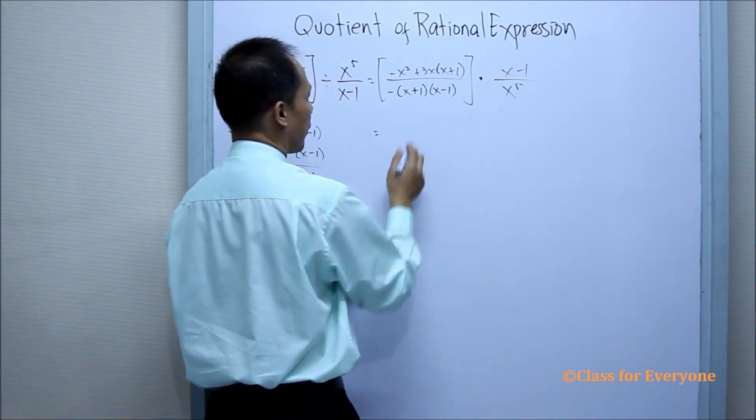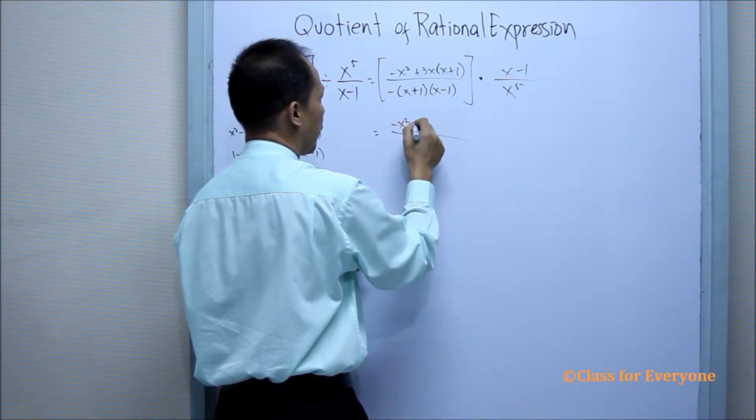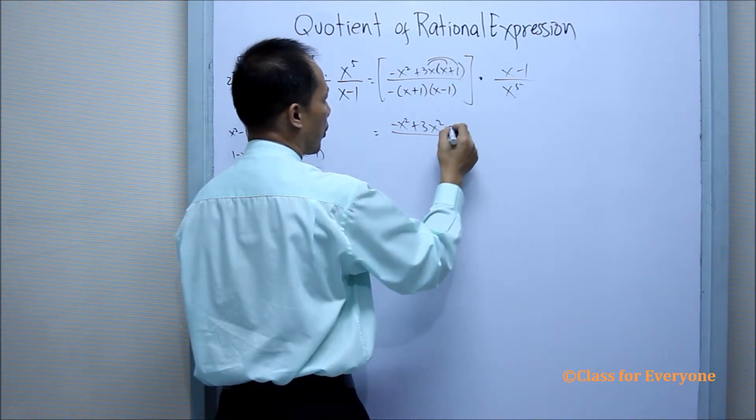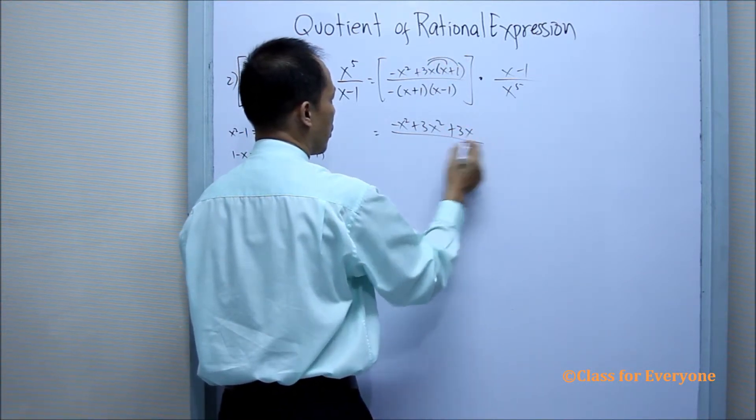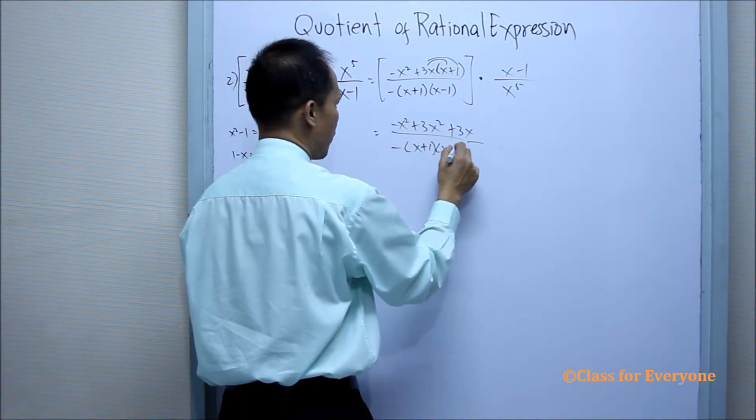Now, combining this first, we have negative x squared plus 3x squared. So we are going to distribute plus 3x all over negative x plus 1 times x minus 1.